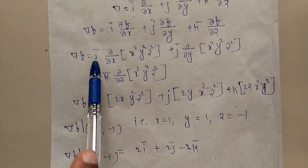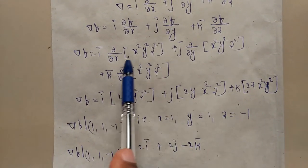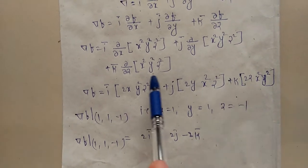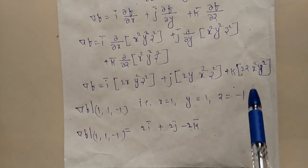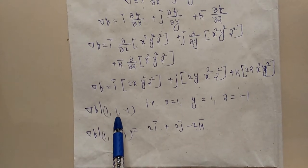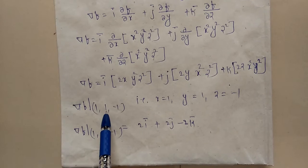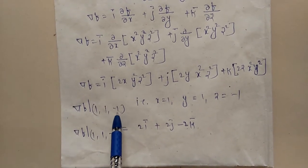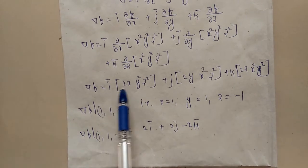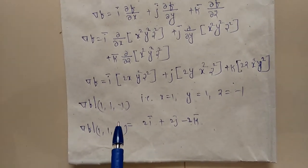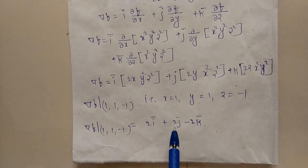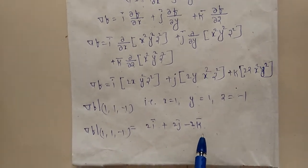Taking partial derivatives: i times the partial derivative of x²y²z² with respect to x, plus j times partial derivative with respect to y, plus k times partial derivative with respect to z. After finding ∇f, we evaluate at point P = (1, 1, -1), where x=1, y=1, z=-1. Substituting these values, we get ∇f at point P = 2i + 2j - 2k.